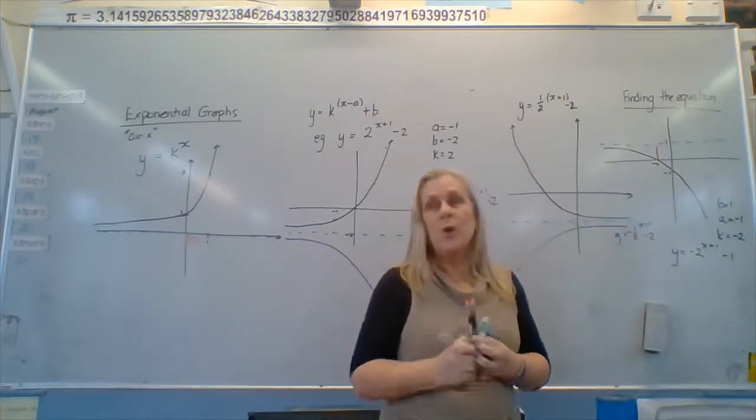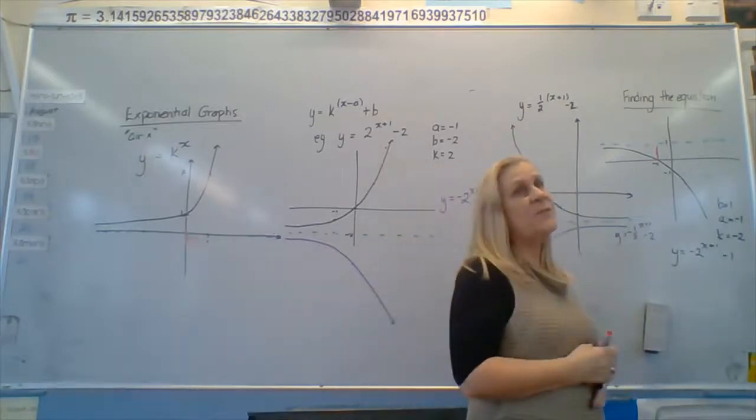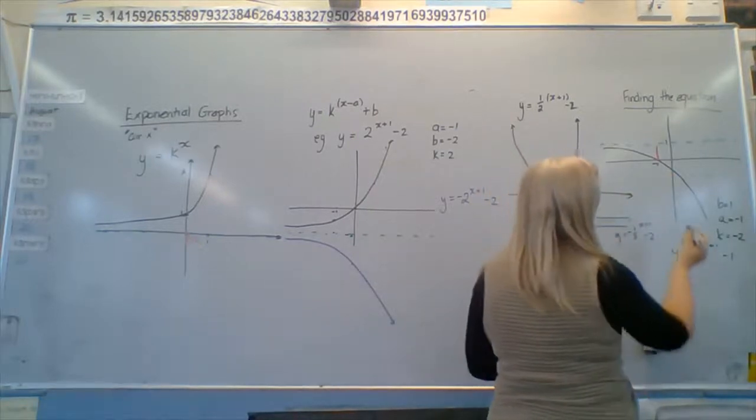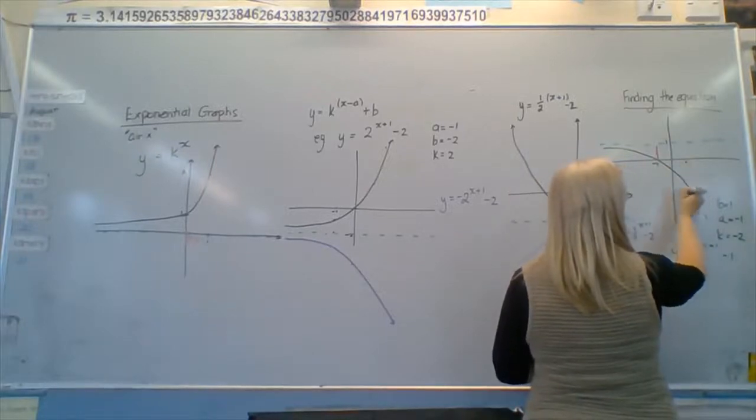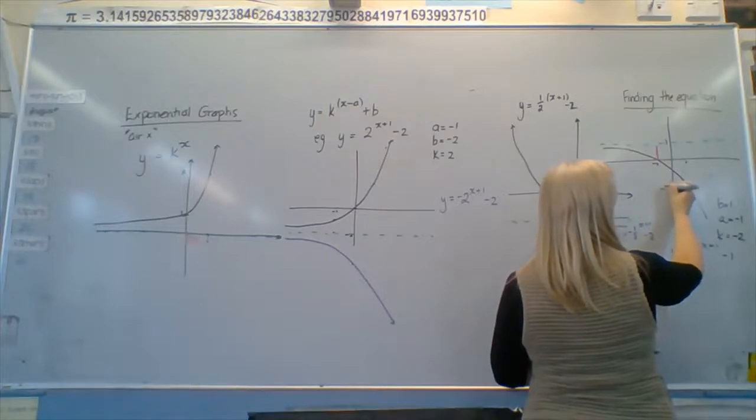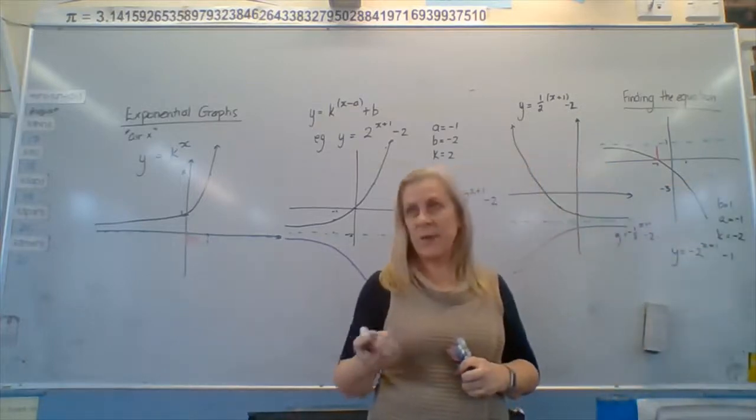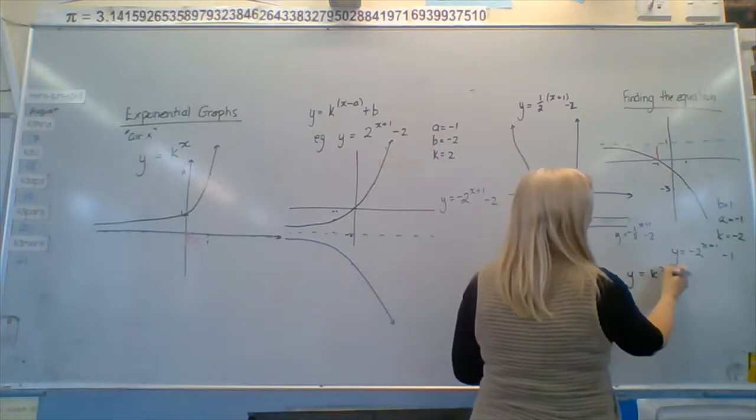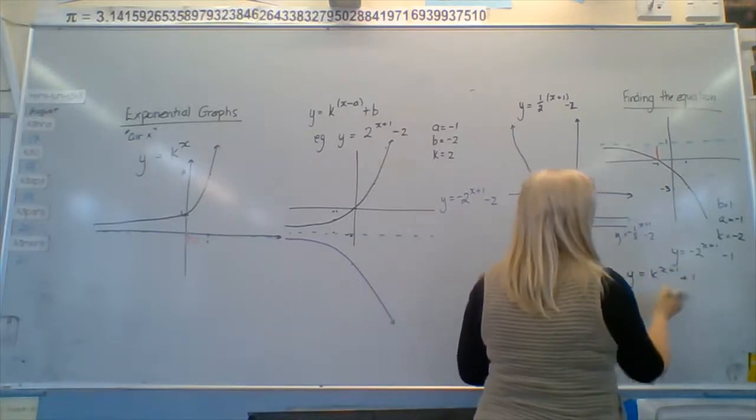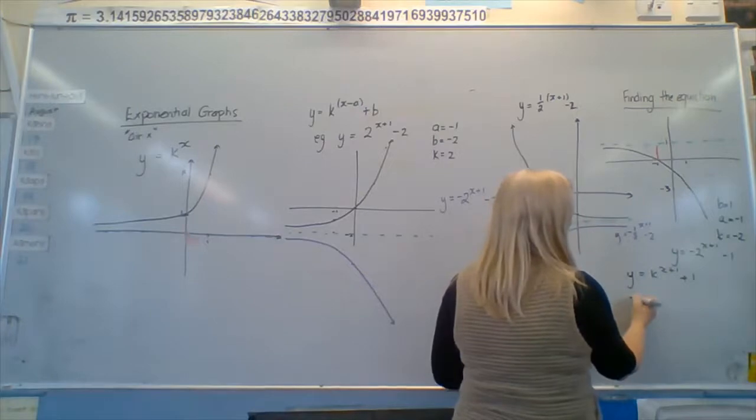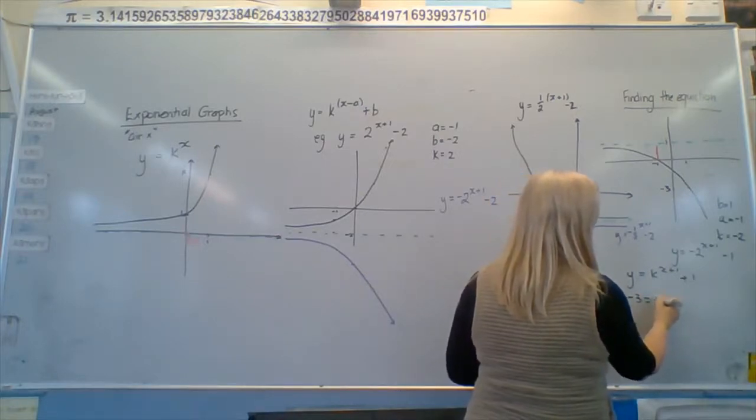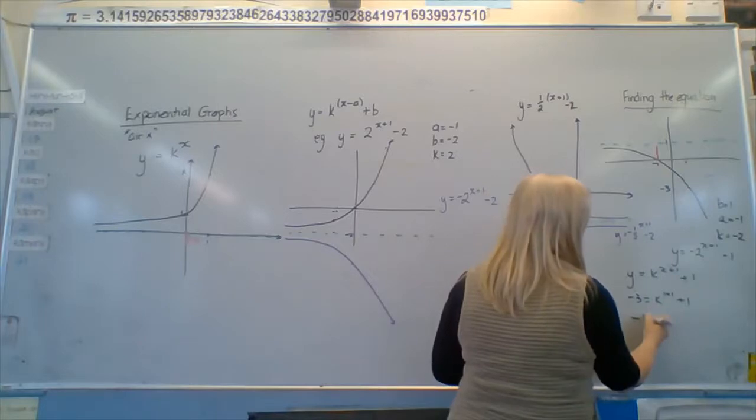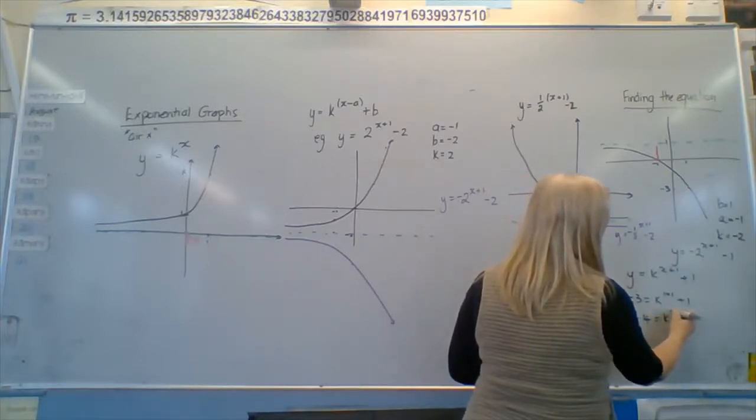All right. If we had been given a point, we could use that point to find it. So if we had not had this and we had been told only that at 1 the value was negative 3, we could use that point to help us solve it. We just substitute in, again, the same way we always have. Y equals k to the power of x minus 1 plus 1. Sorry, plus 1. So we've got negative 3 equals 1 to the power... No. K to the power of 1 plus 1 plus 1. So we take that away on the other side. Negative 4 equals k to the power of 2.